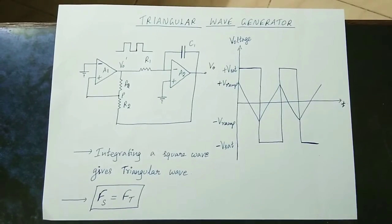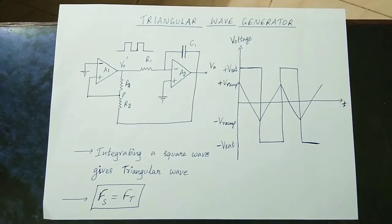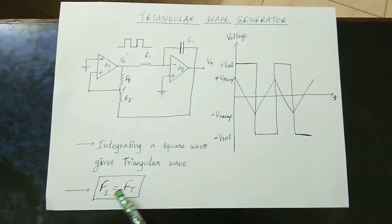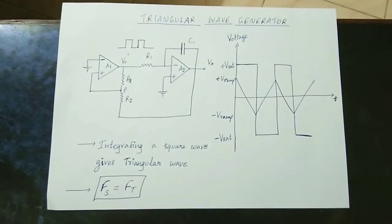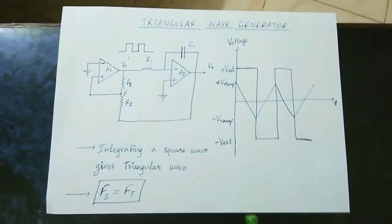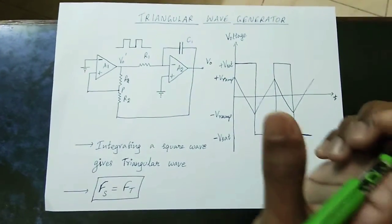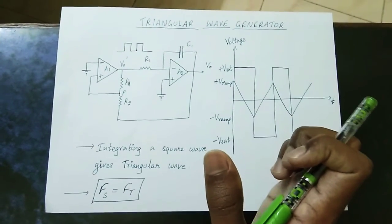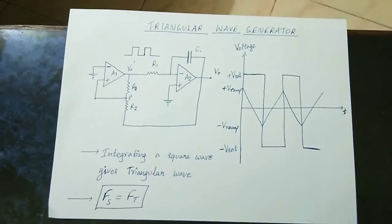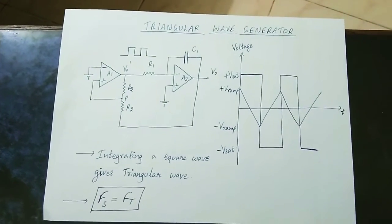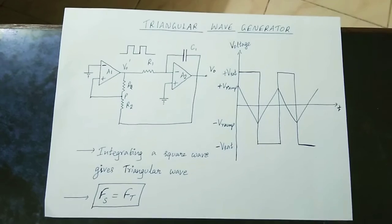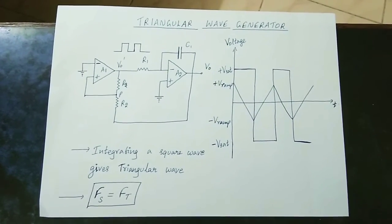It's a very simple concept. The most important thing is that the frequency of the square wave and the triangular wave are equal. The frequency of the square wave equals 1 divided by T, where T is the time period. The number of oscillations per second gives the frequency.